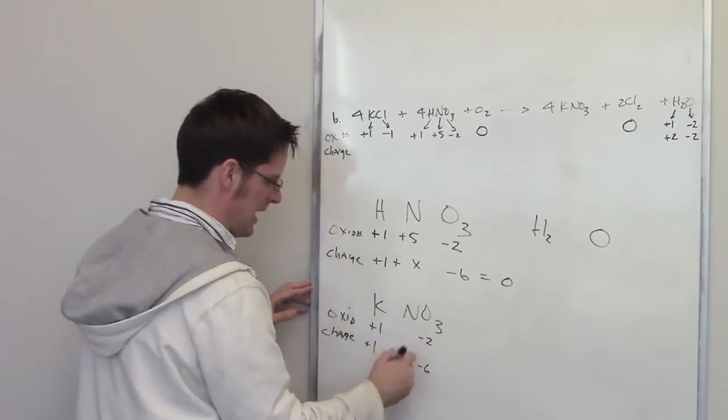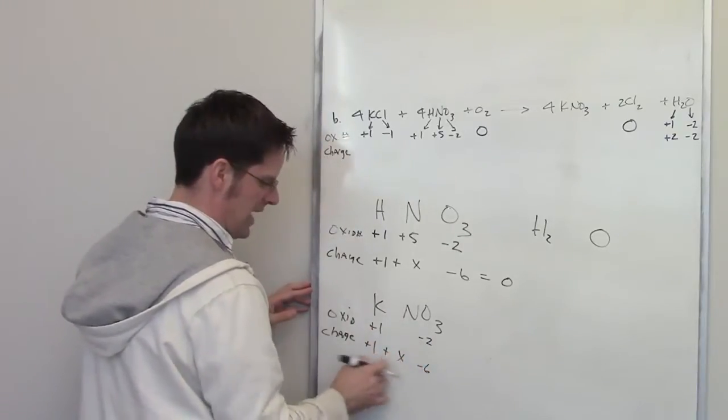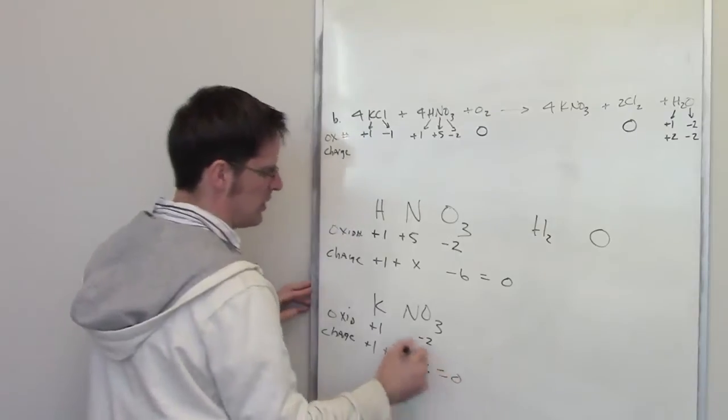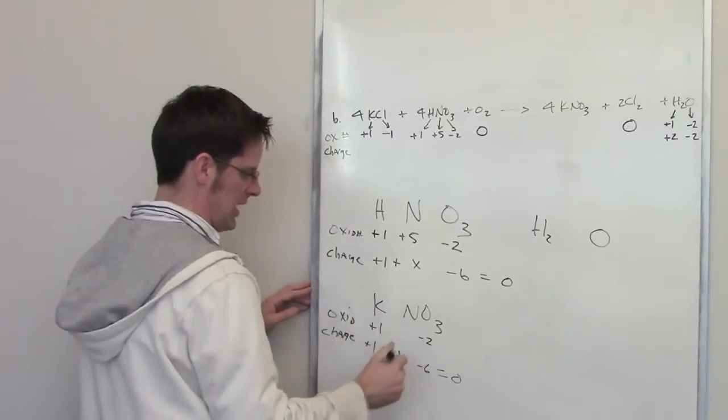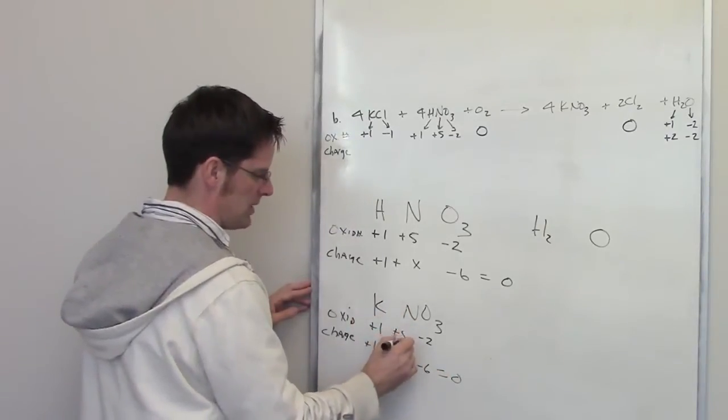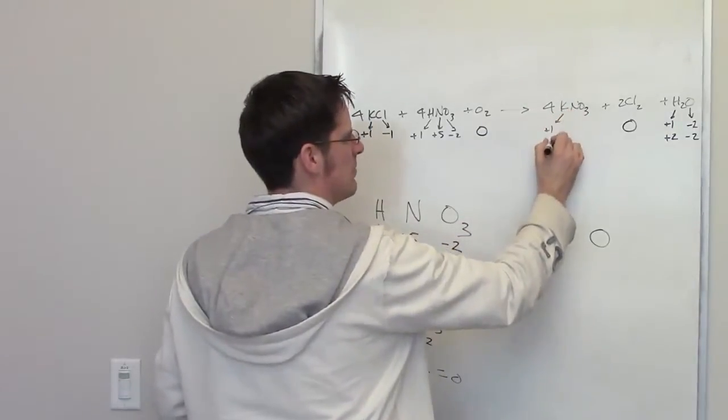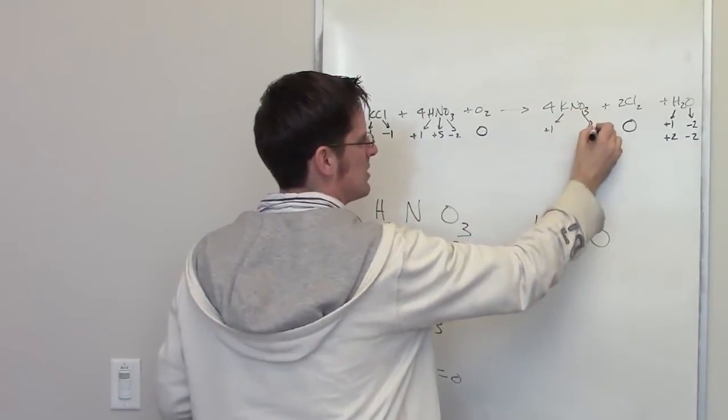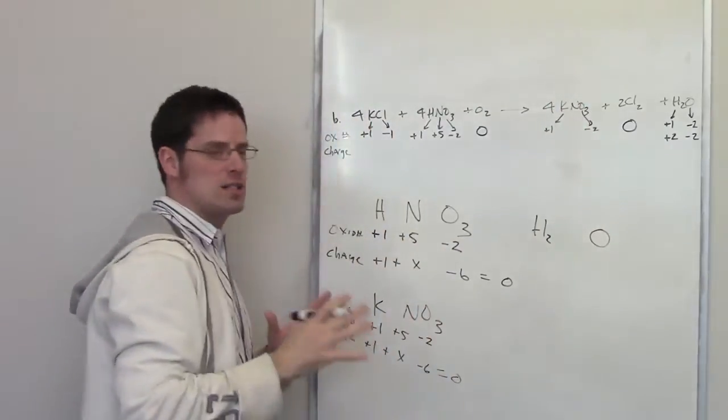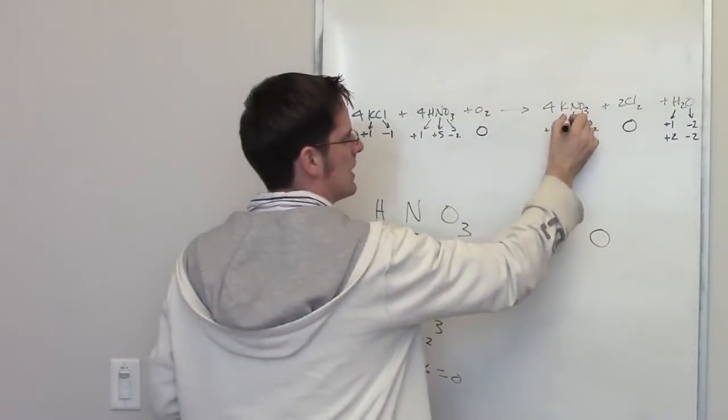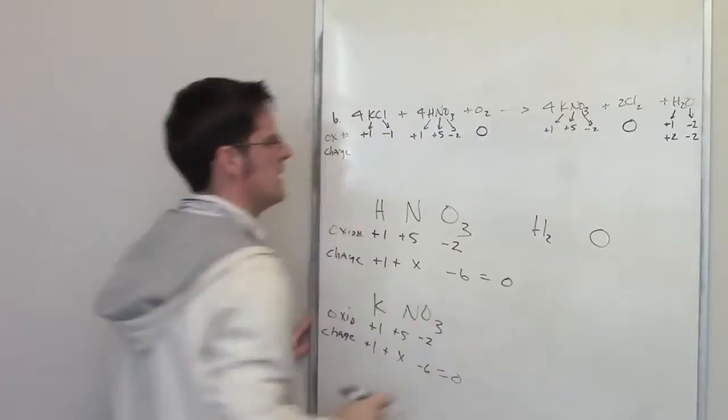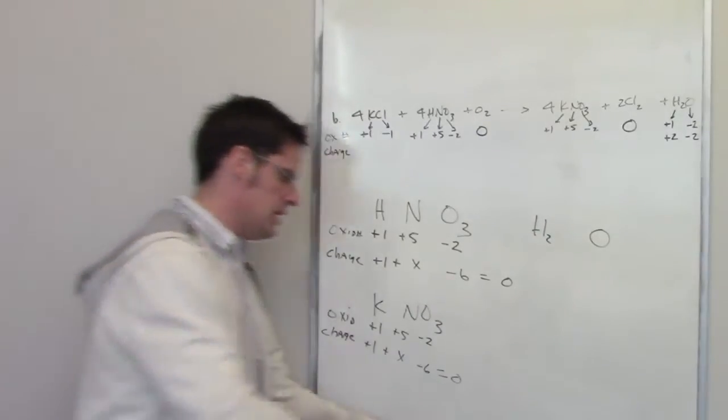So nitrogen, once again, has to have some value that when added to these comes out to be zero, because zero is the overall charge for KNO3. That also comes out to be plus five. So here I've got potassium with an oxidation number of plus one, each of these oxygen atoms with an oxidation number of negative two, and this nitrogen with an oxidation number of plus five.